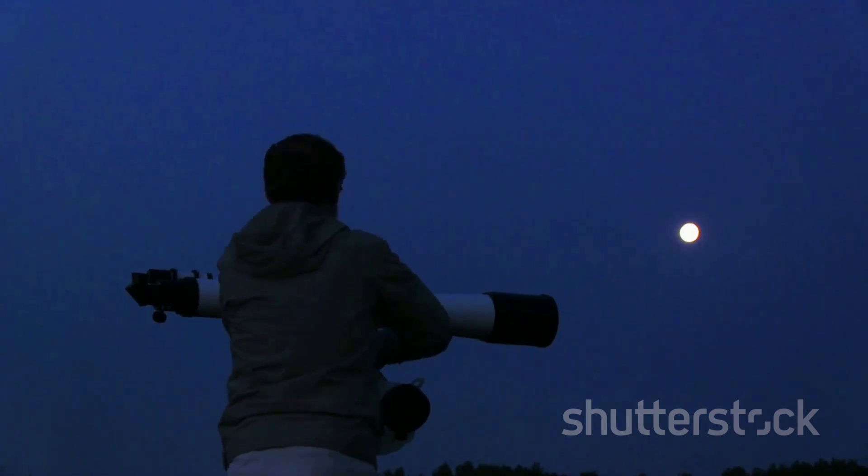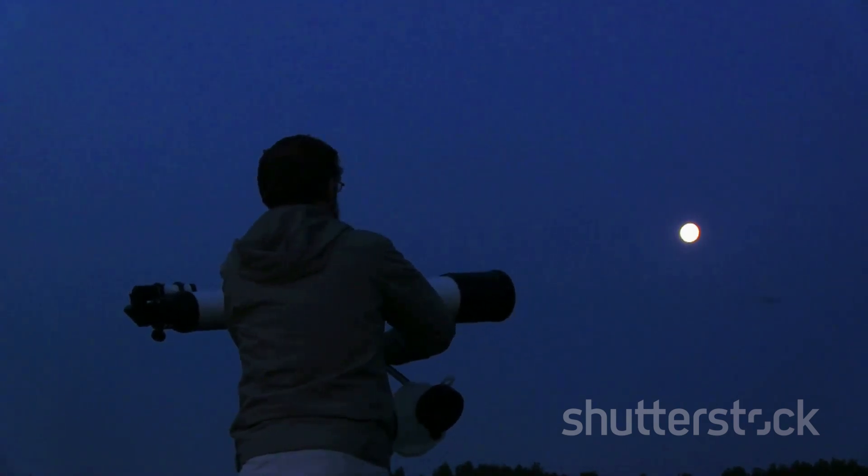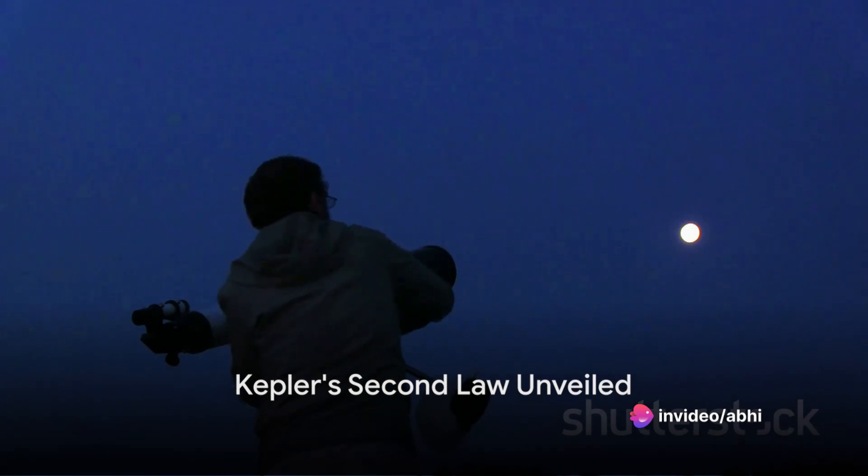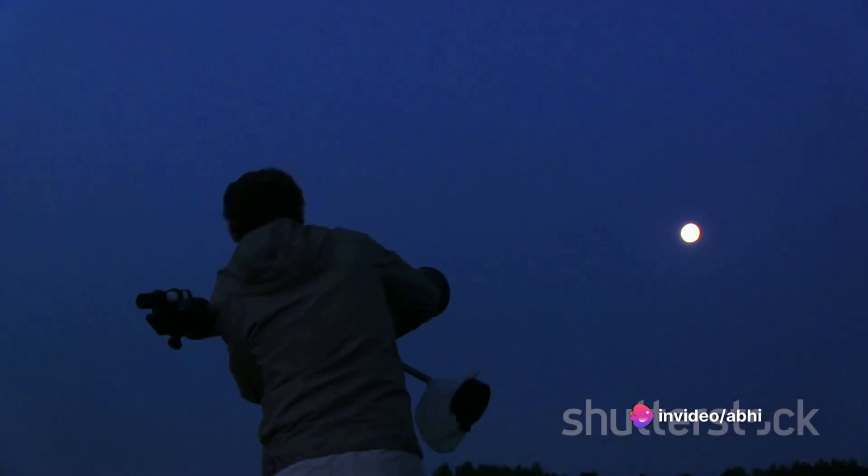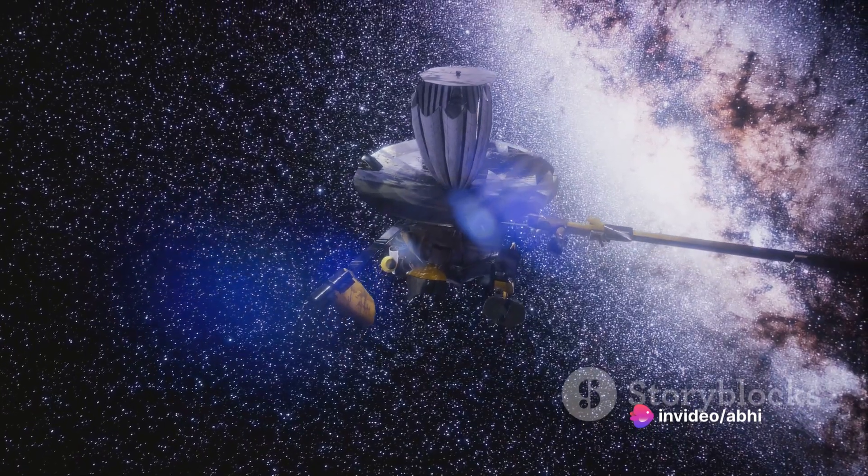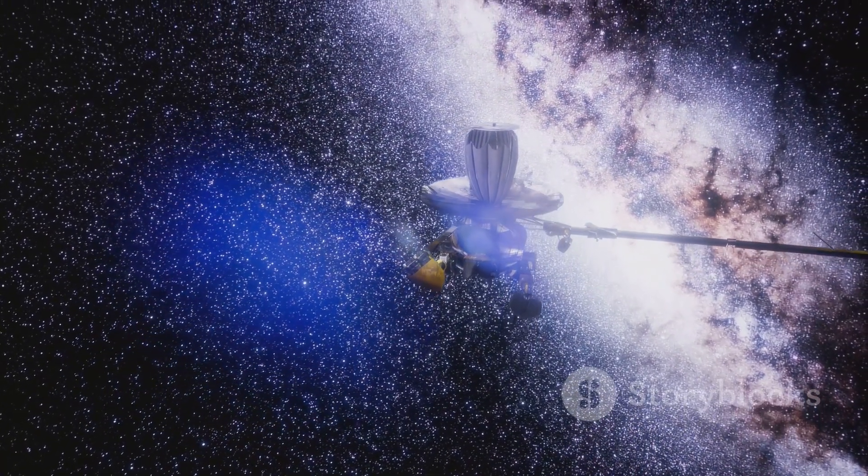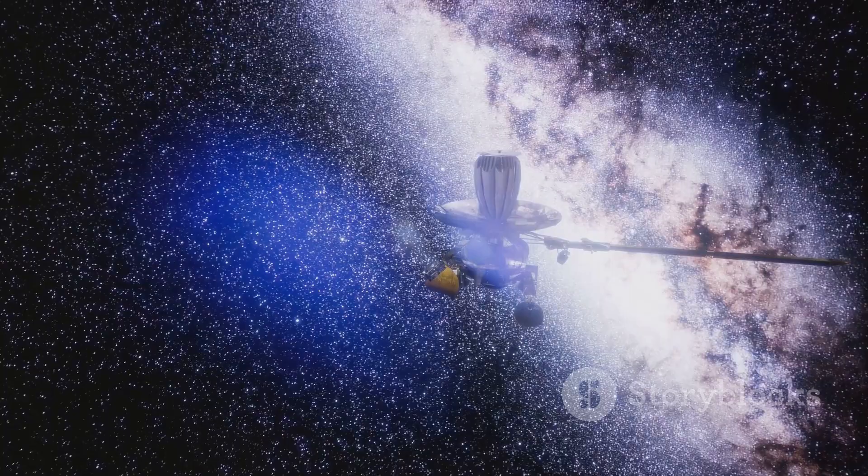The second law implies that when a planet is closer to the Sun in its elliptical orbit, it moves faster, and when it is farther away, it moves slower. This is because the gravitational pull of the Sun is stronger when the planet is closer, causing it to move more quickly.